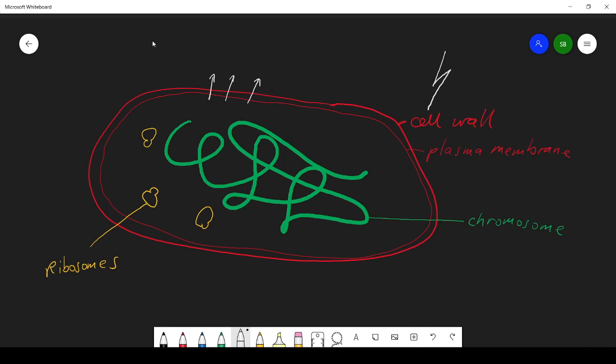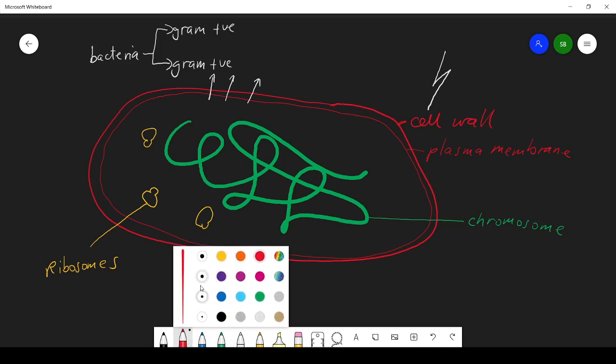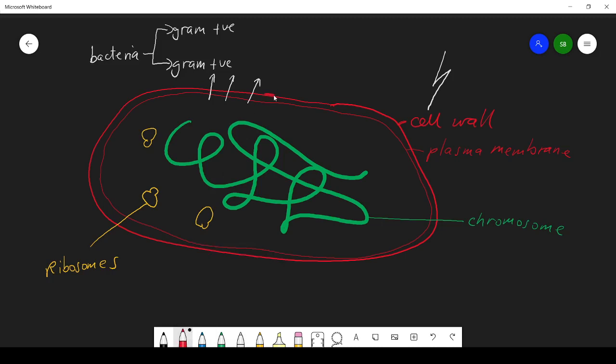You might remember that there are two types of bacteria - you might want to check and look this up - there is gram positive and gram negative. It's all to do with the way they take up this gram stain. Basically, gram positive bacteria have a much thicker cell wall, and the pressure that they experience is something like 20 atmospheres.